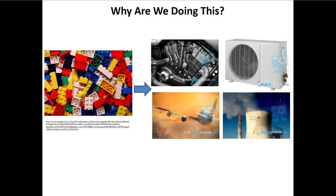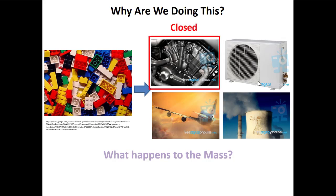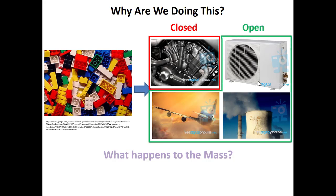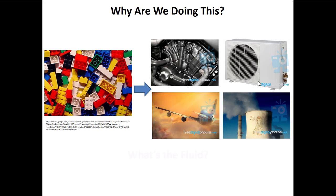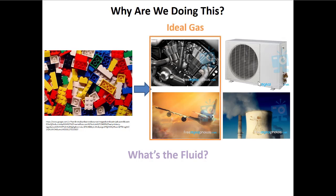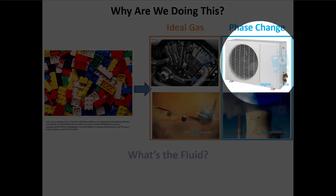We need to know open systems and closed systems because we can characterize these different cycles in different ways. One way is to think about what happens to the mass — internal combustion engines are modeled as closed systems, whereas jet engines, power plants, and refrigeration cycles are modeled as open systems. Another way to characterize cycles is by the working fluid: ideal gases are used in internal combustion engines and jet engines, while fluids with phase changes are used in nuclear power plants, coal-fired power plants, and refrigerators.